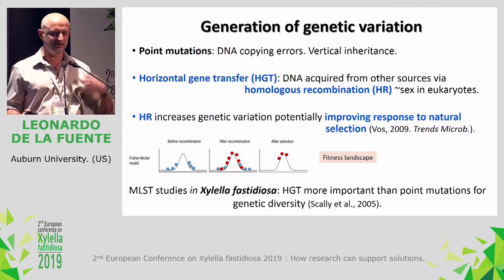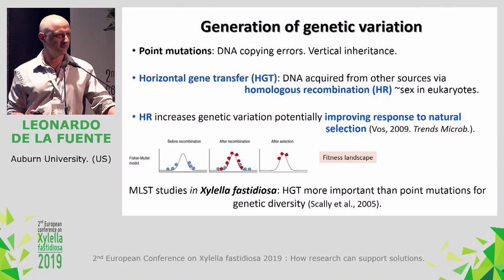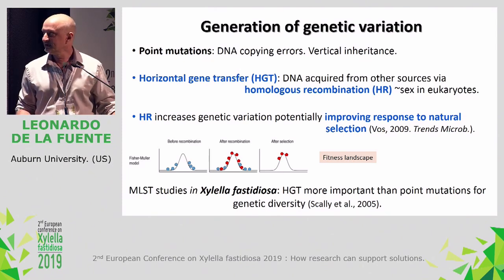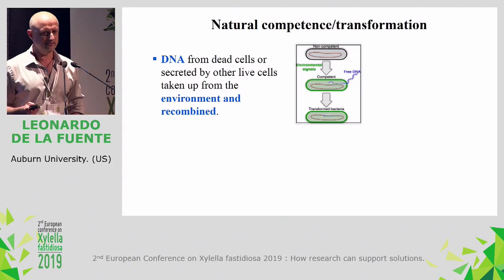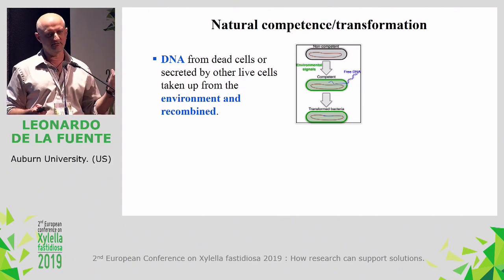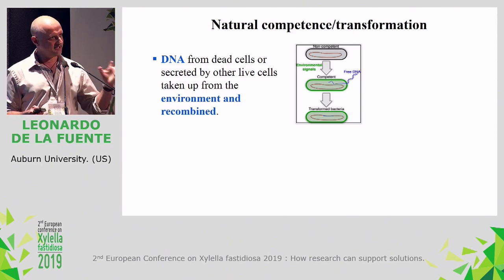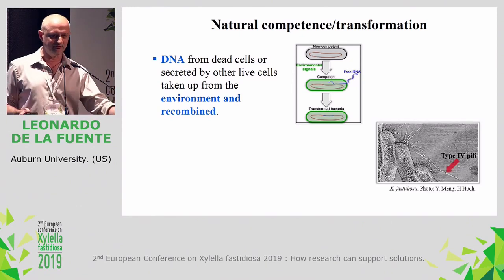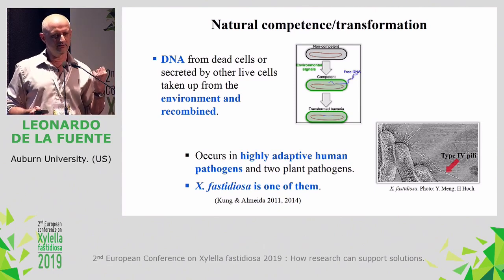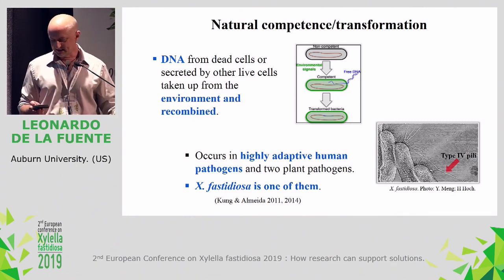In the case of Xylella, it was already described by MLST that homologous recombination is more important than mutation for genetic diversity. How does a bacterium get DNA from outside? There are three main mechanisms, and I'll focus on natural competence and natural transformation. This was first demonstrated for Xylella by the group of Rodrigo Almeida — a collaborator in this project — who showed that Xylella can take DNA from the environment and recombine it into their genome, mediated by type IV pili. This mechanism occurs principally in highly adaptive human pathogens, and there are only two plant pathogens known to do this: Ralstonia solanacearum and Xylella fastidiosa.